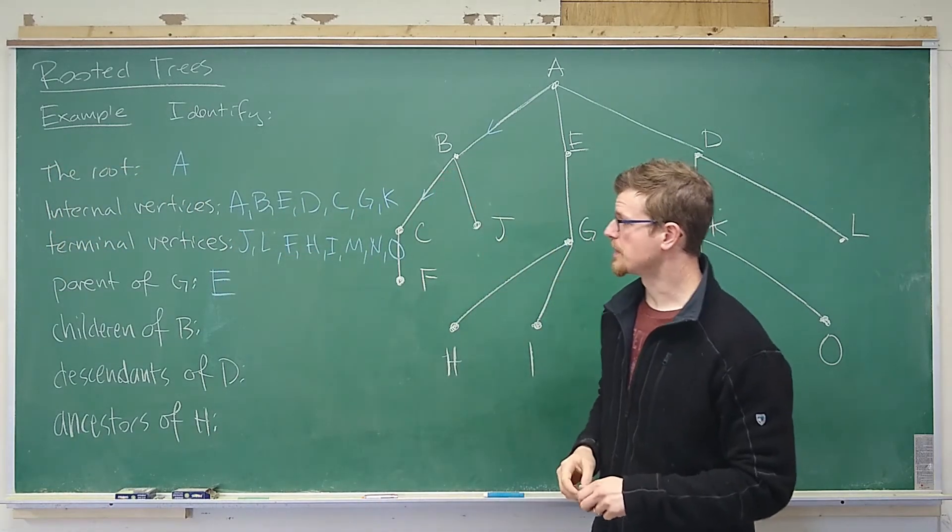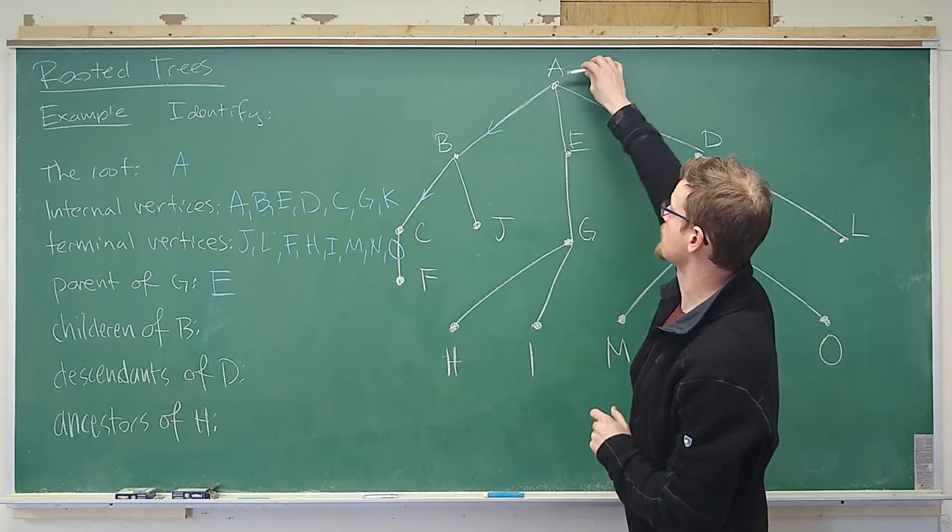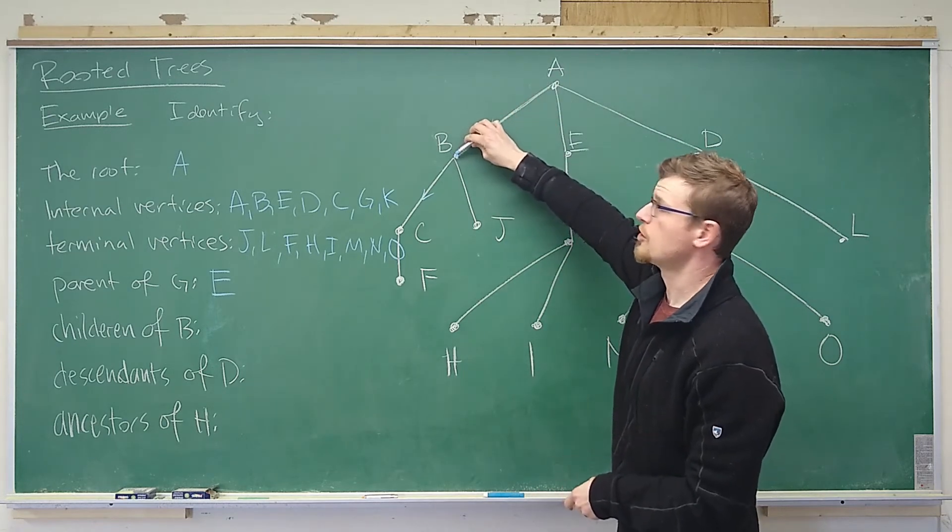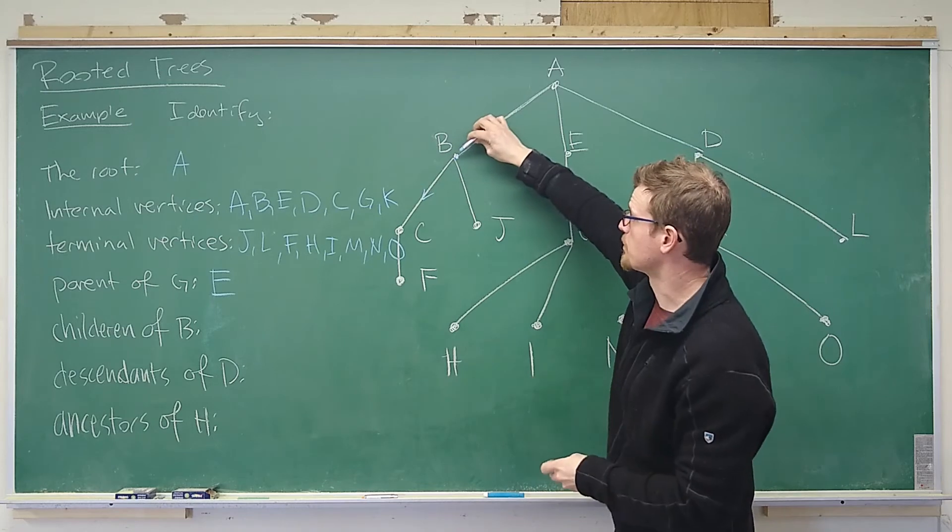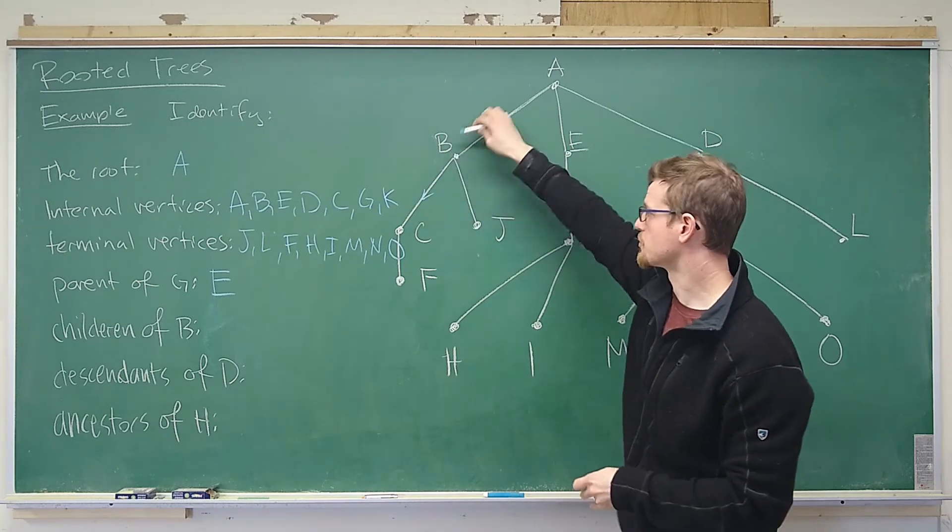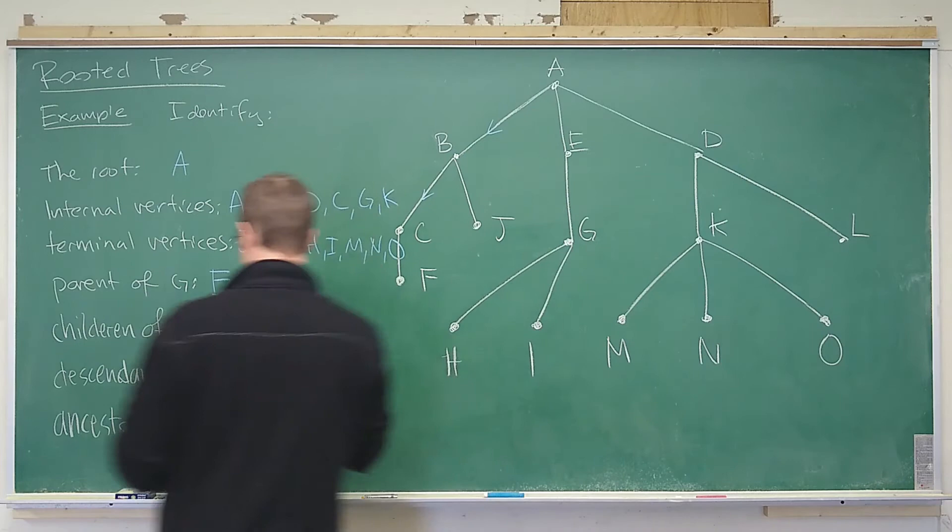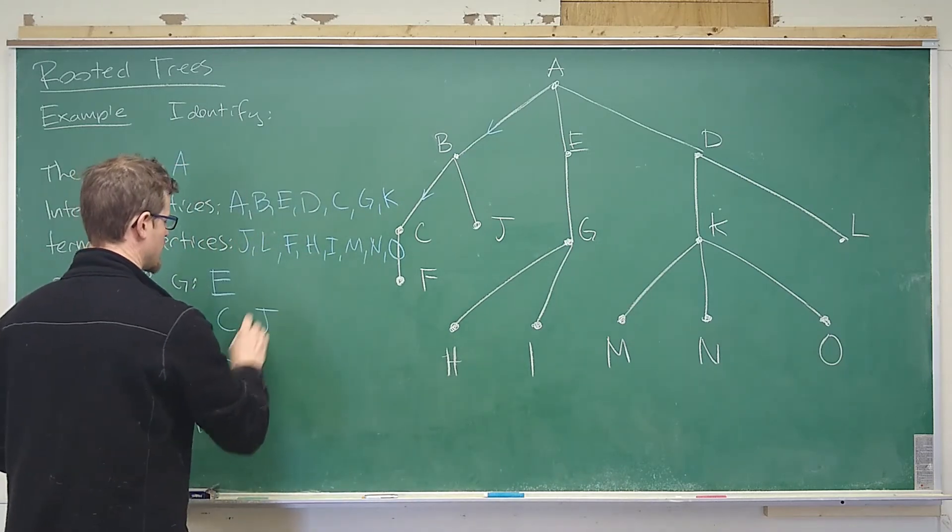So then we want to take a look at the children of b. So if we were to travel from a to b, where could we go next? Well we could go to c or we could go to j. Those are the children of b. c and j.